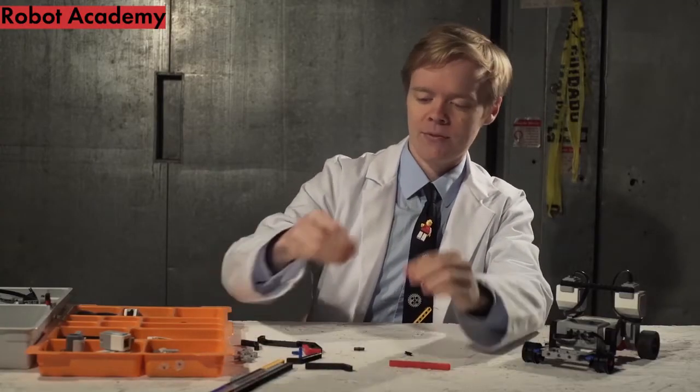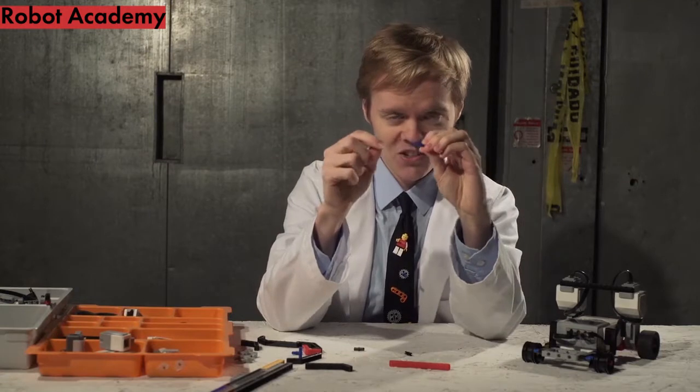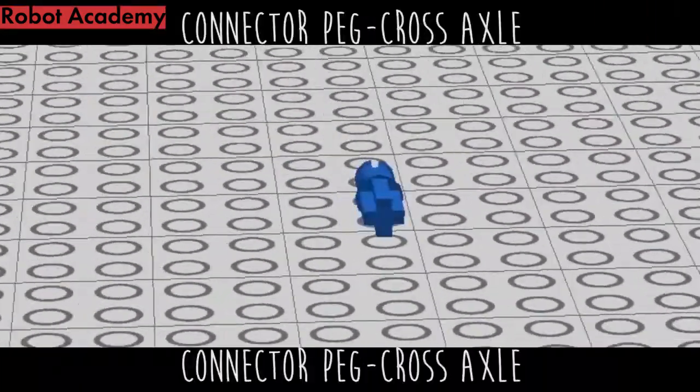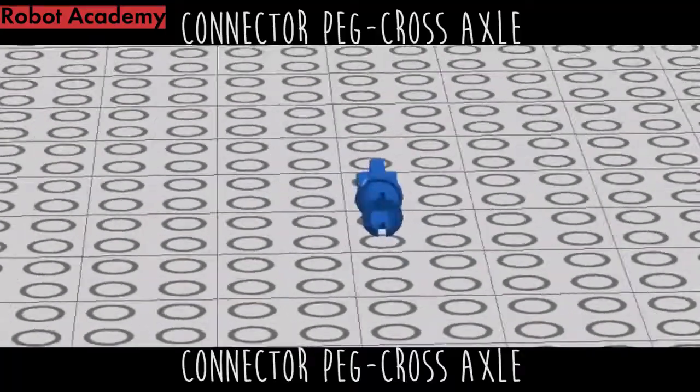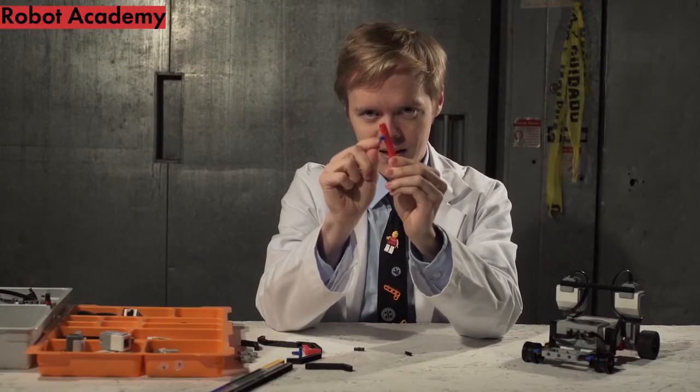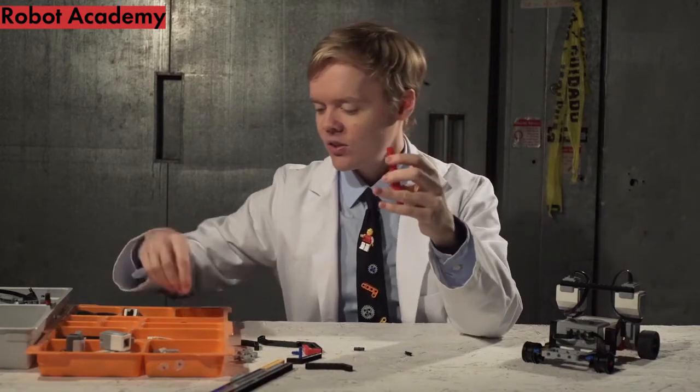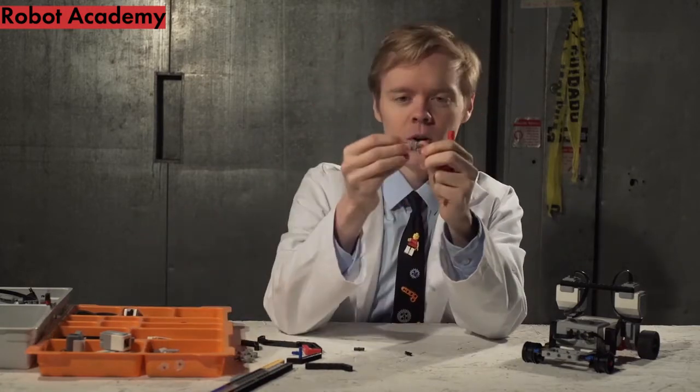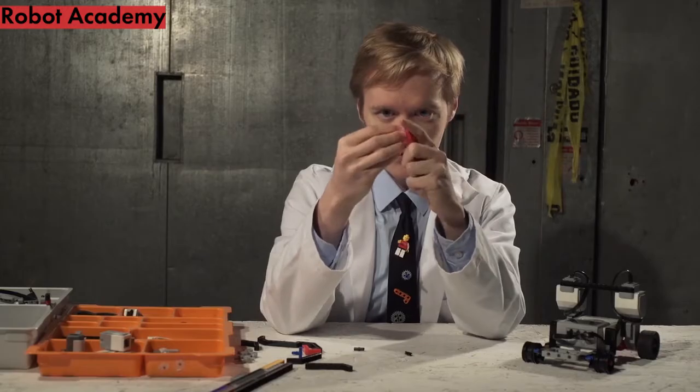And finally, we have this type of peg. And this is special because on one side is a regular circle connector, but on the other side is an axle connector that can be used to attach into one of these types of holes.